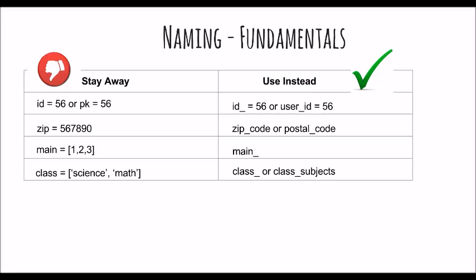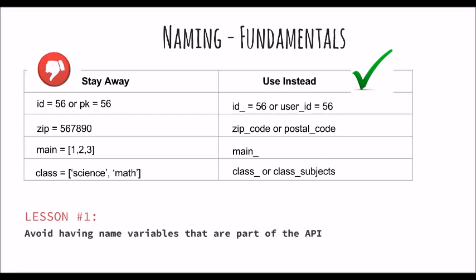What can be done instead is to go for what is given on the right. There are plenty of other variables you can think of, such as iter, map, true, false. If you're using an editor such as Sublime or PyCharm, you can see that your variables will be highlighted a different color if they correspond to those in the API. Lesson number one: avoid naming variables that are part of the API.